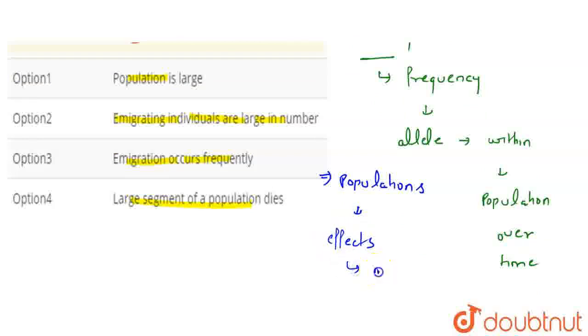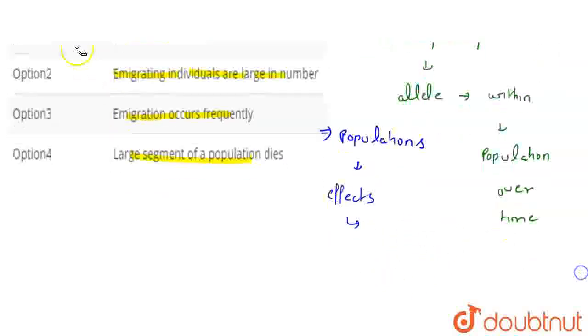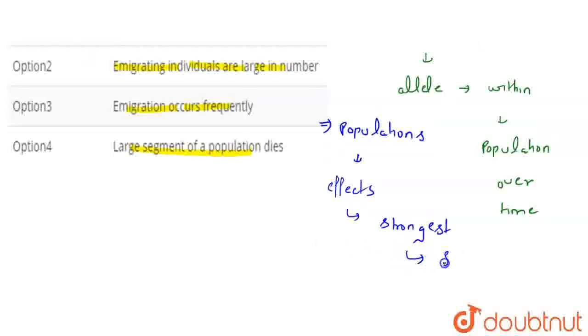But the effect of it will be maximum, strongest where? Its effects are strongest in small populations. So small populations are most affected.